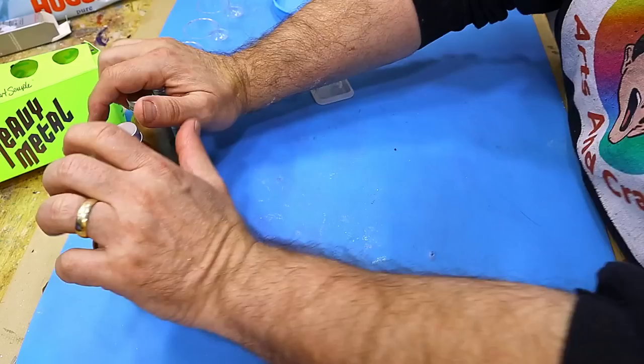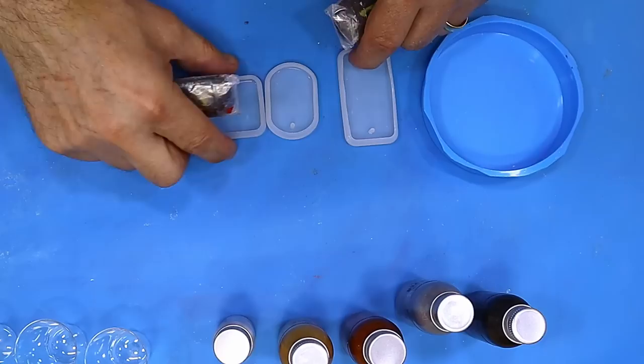So let's get some resin on the go. I'm going to make some pendants and a coaster because I want to see how well it works in the pendant mold and the coaster mold.